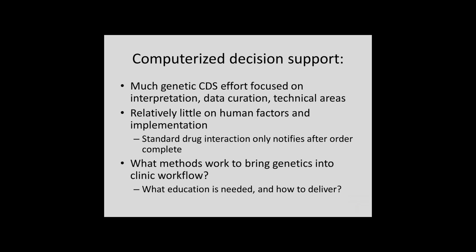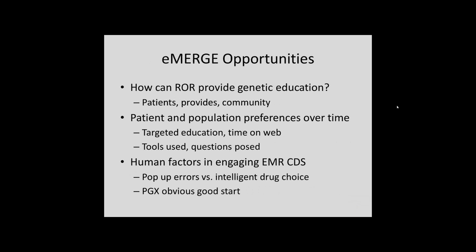How to deliver that is another area where we can go further. The opportunities are: how eMERGE can be used for education, how population preferences change over time especially with targeted education and after results are returned, and then looking at human factors engineering and engaging the EMR in clinical decision support. Pharmacogenomics is an obvious good place where implementation across the different systems in the eMERGE network could be used as a tool.